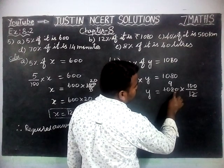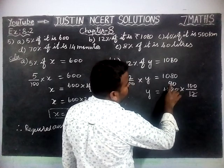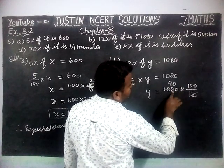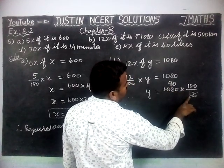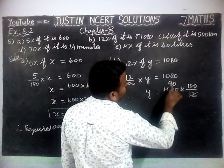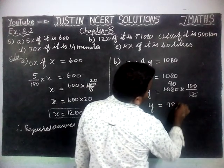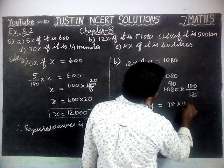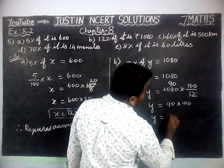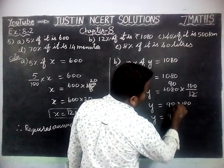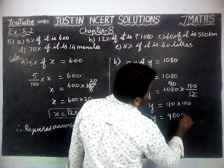Next, bring down 0, giving 90. We can multiply: 9 twos are 18, remaining 1; 1 nine is 9; 9 plus 1 is 10. So we are getting Y is equal to 90 into 100. Y is equal to 9, with three zeros — so 9,000.